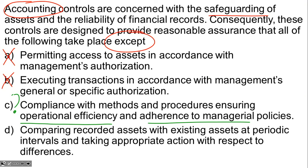So choice C, as we suspected, is the correct answer. There are certainly controls that address operational efficiency and adherence to managerial policies, but once we've identified that we're specifically talking about accounting controls, choice C is correct — because those are not accounting controls that would handle that.